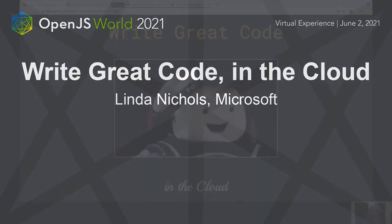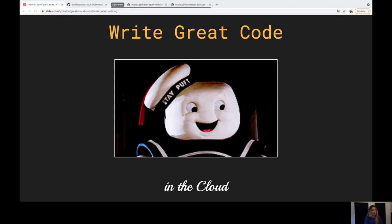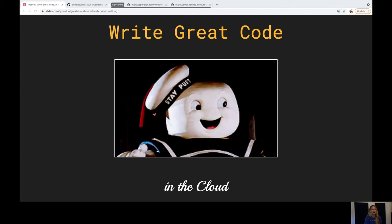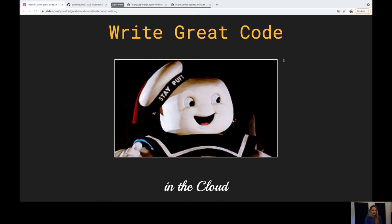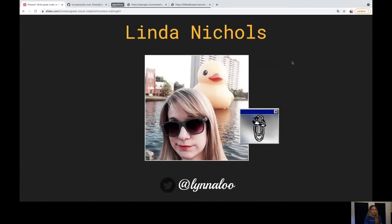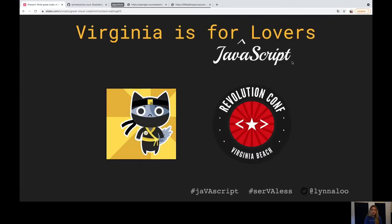Hey OpenJS World, my name is Linda Nichols and today I'm going to talk about writing great code even in the cloud. I'm going to start out by going through some slides, talking about maybe some bad process, some good process, and then having a little hands-on demo at the end. I work for Microsoft. I am a cloud native global black belt, and I focus really in serverless and development. I'm passionate about developer process. I'm from Virginia, and I live in Norfolk, where I organize Norfolk.js, our JavaScript user group, and Revolution Conf, our very own conference in Virginia Beach. I'm a co-founder and organizer of both.